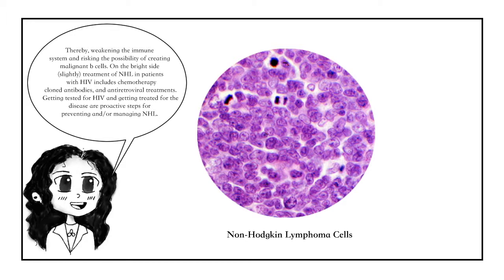On the bright side, slightly, treatment of NHL in patients with HIV includes chemotherapy, monoclonal antibodies, and antiretroviral treatments. Getting tested for HIV and getting treated for the disease are proactive steps for preventing and or managing NHL.